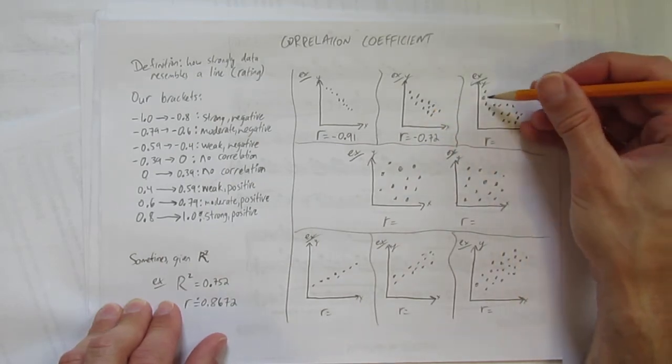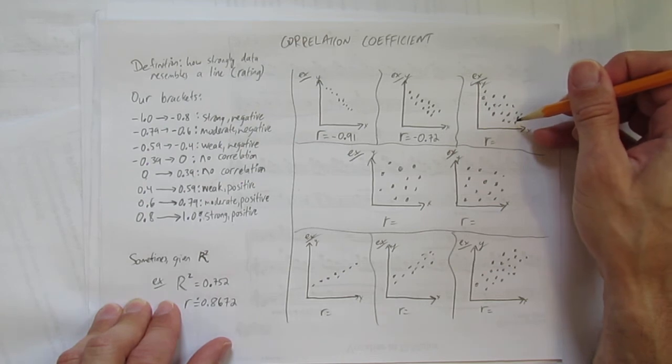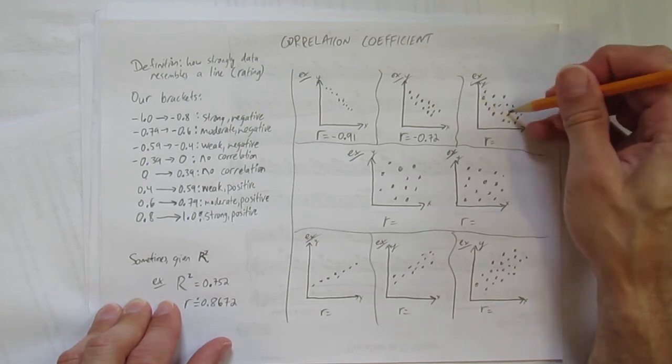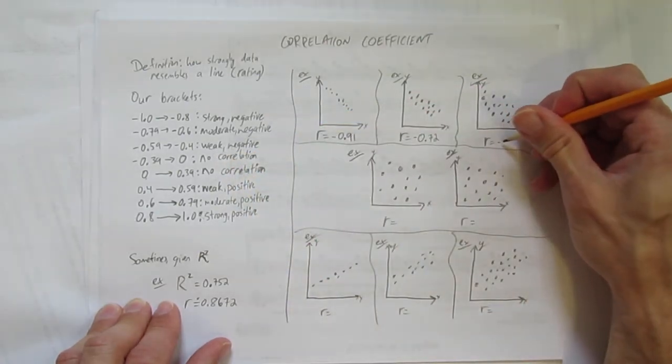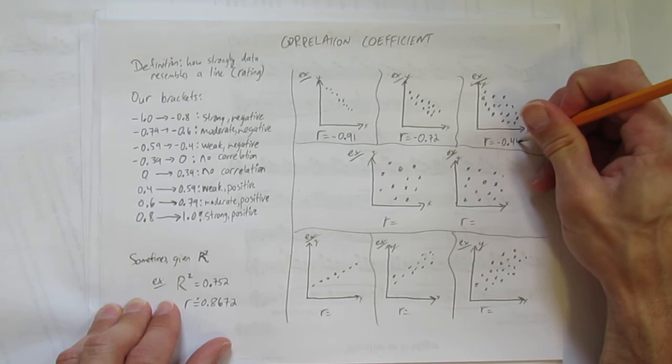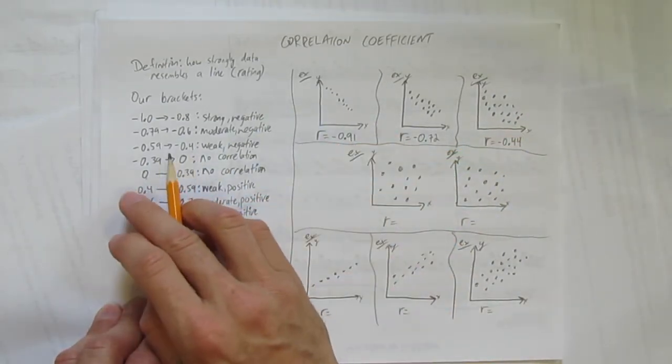Here's a relationship very loose but still you can see the pattern that it's going down. So I need something going to the right and down, that's negative, and something that's weak. So maybe I'll say negative point four four. That's a negative weak and I just made up that number inside this range.